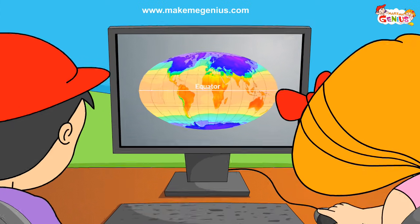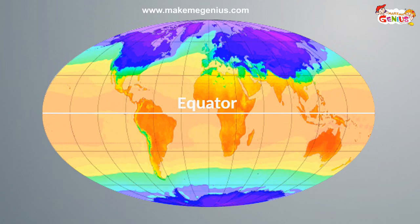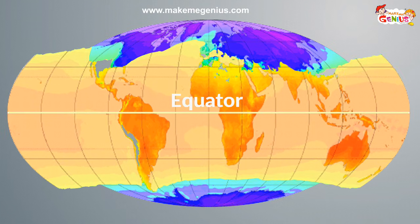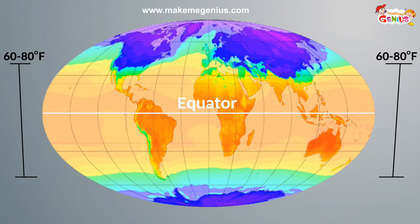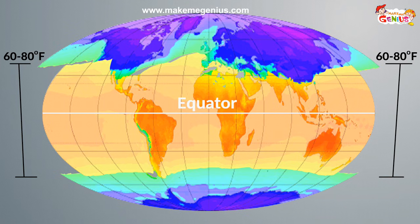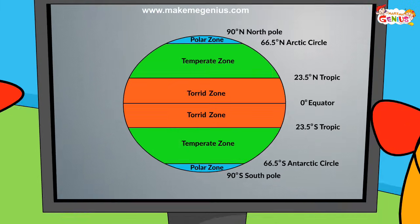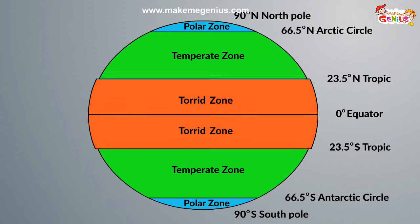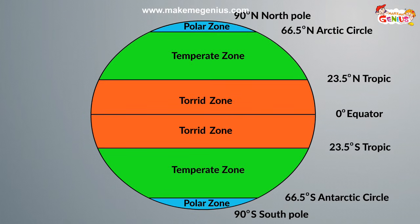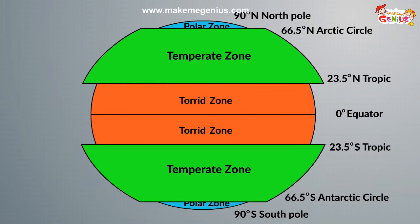Now let's learn about the causes of different kinds of climate in different parts of the world. Look at this. It's a globe. Why are there different colors in different parts of the globe? The colors on the globe represent the average temperature of those places. That means the places near the equator have a very high temperature. Yes. We can divide the whole of our Earth into three heat zones based on the climate. The area near the poles is known as the polar region, and the areas near the equator are known as the torrid regions. And areas between torrid and polar zones are known as temperate zones.